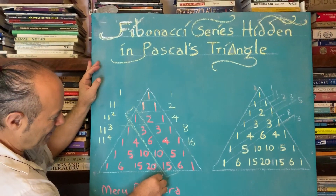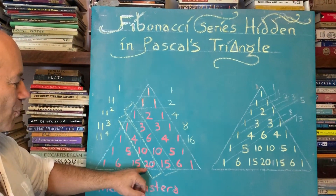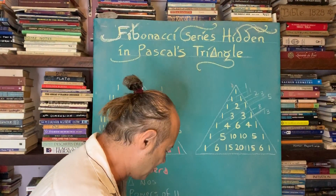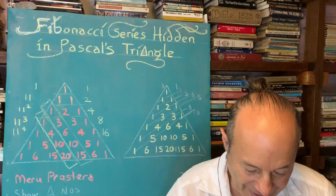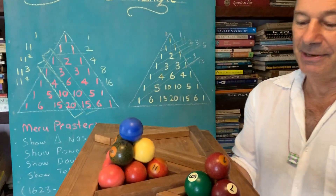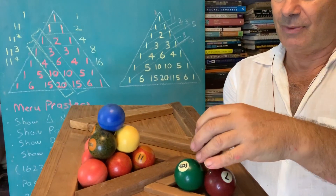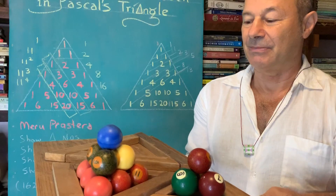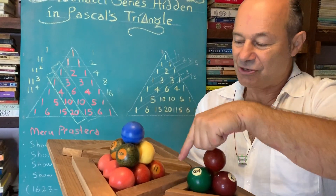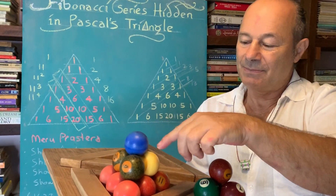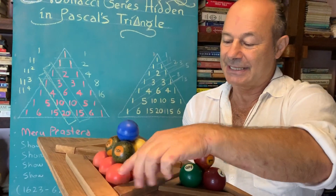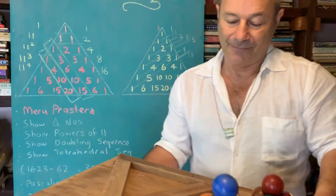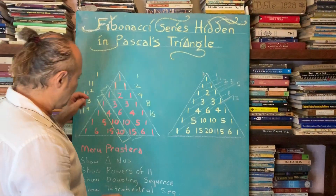Then I'm going to look at the next diagonal along: 1, 4, 10, 20. Does anyone know where that sequence comes from? These are billiard balls - one plus the next triangle number three make four, that's where the four comes from. So the next tetrahedral number: one and three is four, adding the next triangle number six at the base gives one plus three plus six equal ten, then ten plus this ten above makes twenty. The tetrahedral sequence is 1, 4, 10, 20.